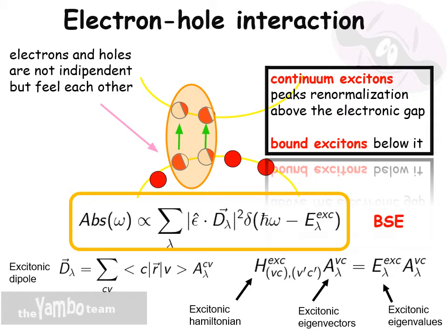All these effects, called excitonic effects, can be described by the solution of the Bethe-Salpeter equation, and as you will see, more properly in the next seminar, the solution of this equation can be remapped in the diagonalization of a two-particle Hamiltonian — the so-called excitonic Hamiltonian — that contains all the physics needed to describe the electron-hole interaction. The absorption is then a sum of excitonic transitions, where the two main ingredients are the excitonic eigenvalues that appear in the delta function, and the excitonic dipoles, expressed as a linear combination of the independent particle dipoles through the excitonic eigenvectors.